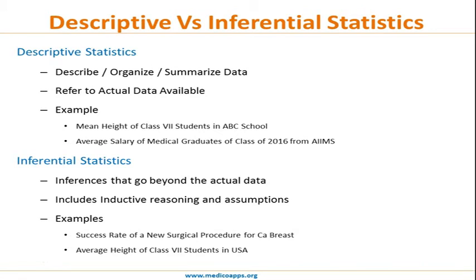Another example would be the average height of class 7 students in the USA. You cannot have the height of every student in class 7 across the United States, but if you do a sampling and get some data, you would be able to predict the average height of class 7 students in USA. This is the basic difference between descriptive and inferential statistics, and in our biostatistics modules we will be referring to both at various times.